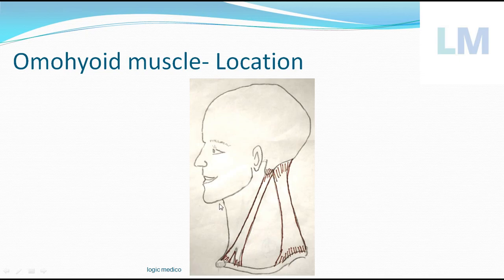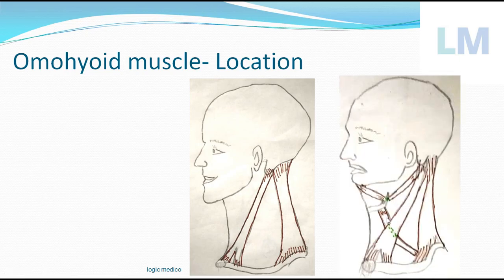This muscle is present on both sides of the neck — the anterior part and the posterior part. The upper portion is called the superior belly of omohyoid, and the lower portion is called the inferior belly of omohyoid. So omohyoid is an important muscle key for dividing the triangles of the neck as well.